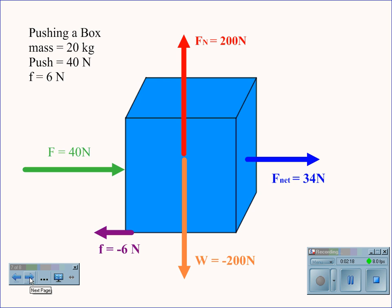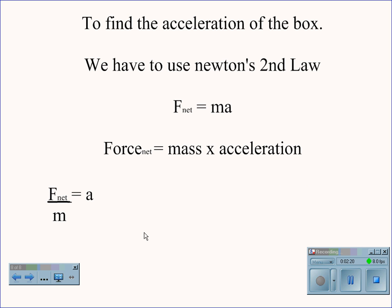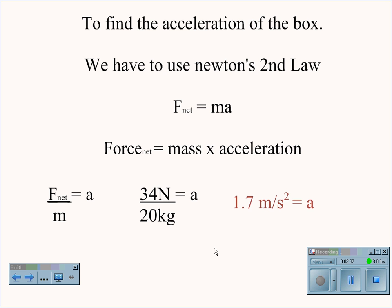Using this 34 newtons, we can apply Newton's second law: force equals mass times acceleration. In this case, net force was 34 newtons and our mass was 20 kilograms. When we divide, we find the acceleration of the box to be 1.7 meters per second squared.